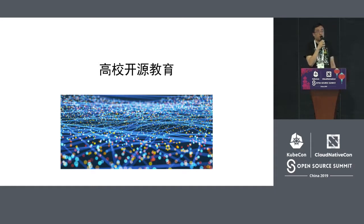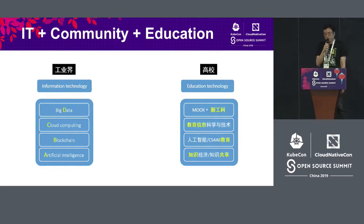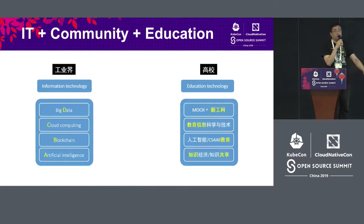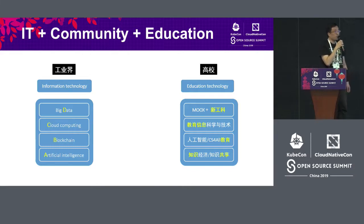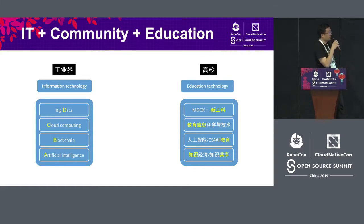Now I'm going to talk about open source education in universities and colleges, especially when combined with degree education. We have a scenario: on the right side we have academia, on the left side we have the industry. You'll find that all new technologies exist in the industry, including those from KubeCon and CNCF — every enterprise is promoting their own technology. Academia is also dynamic — universities are building AI and big data disciplines — but academia is also facing problems: their technology cannot keep up with the trend, and faculty who can truly understand the latest technology are scarce.